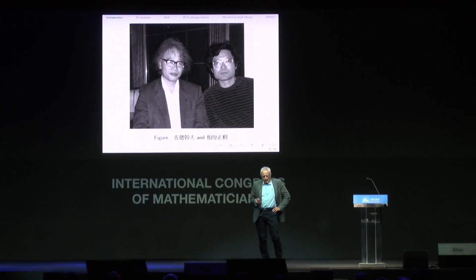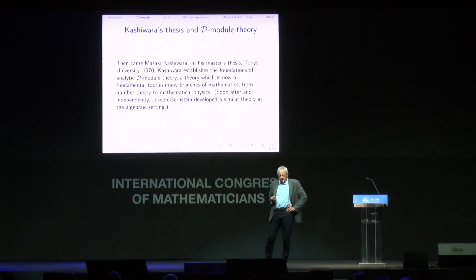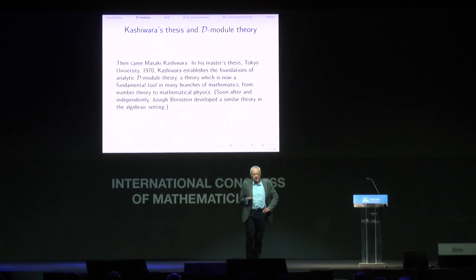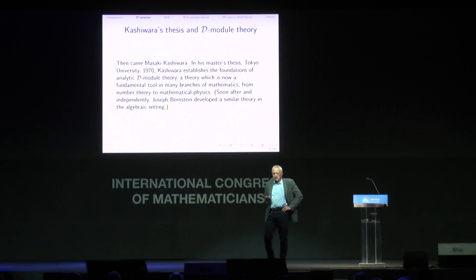Here is a picture of Mikio Sato and Masaki Kashiwara, maybe in the 70s. In his master thesis at Tokyo University in 1970, Kashiwara establishes the foundations of analytic D-module theory, a theory which is now extremely important in many branches of mathematics, from number theory, mathematical physics, and more.